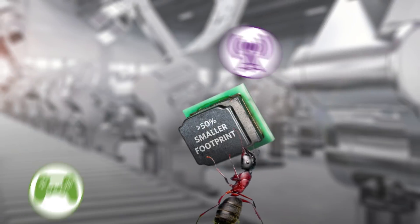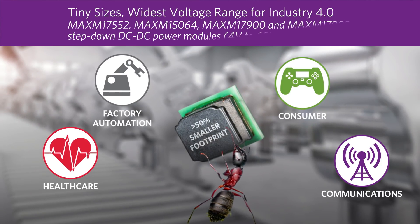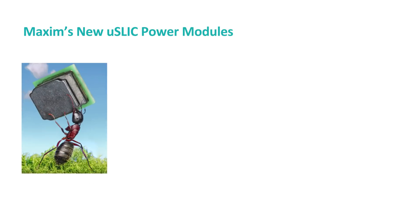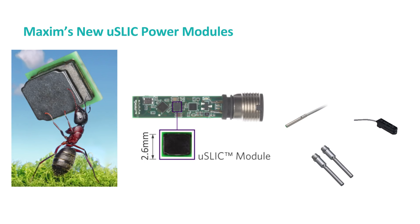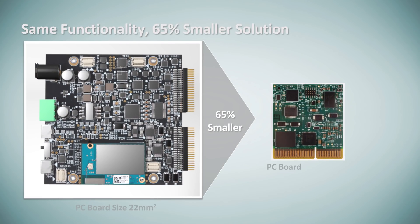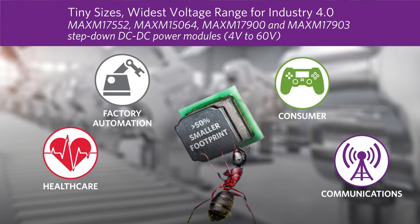Maxim has introduced the smallest DC to DC power modules to date with the widest input voltage, up to 60 volts max. These new micro SLiC power modules are super small — only 2.6 millimeters by 3 millimeters. With this tiny size they rival LDOs, and this is key to solving space and thermal challenges. Maxim's new micro SLiC power module is the latest example of a decade's worth of DC to DC converter integration evolution.